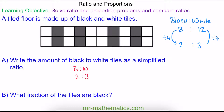For question B — what fraction of the tiles are black? If we look at our simplified ratio we can see we have 5 shares in total, and of those 5 shares, 2 of them are black. So 2 fifths of our pattern is made up of black tiles.